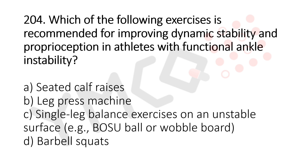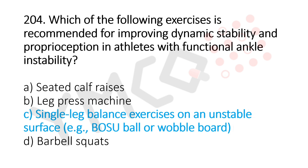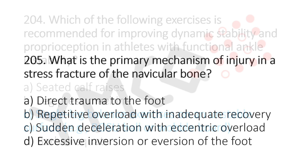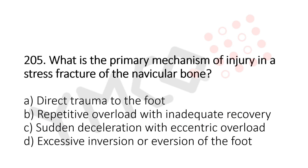Question 204: Which of the following exercises is recommended for improving dynamic stability and proprioception in athletes with functional ankle instability? Option A: seated calf raise. Option B: leg press machine. Option C: single leg balance exercise on an unstable surface, such as a BOSU board or wobble board. Option D: barbell squats. The answer is option C, single leg balance exercise on an unstable surface.